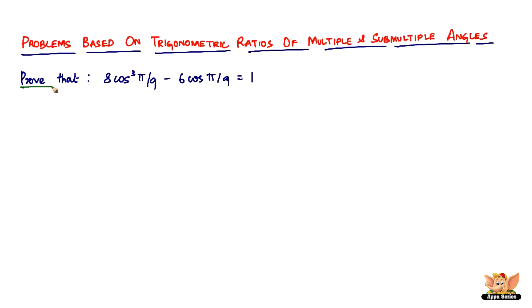You've got a problem which says prove that 8 cos³(π/9) - 6 cos(π/9) equals 1.